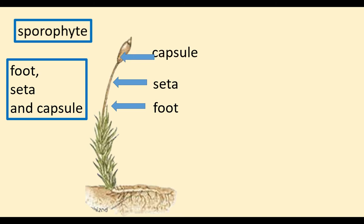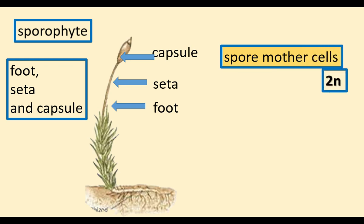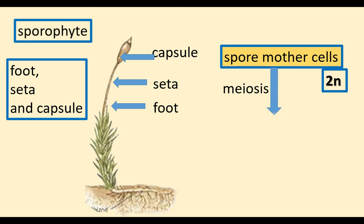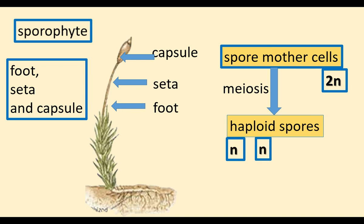The capsules contain spore mother cells. Spore mother cells are diploid and are the last cells of the sporophyte generation. Spore mother cells undergo reduction division (meiosis), which reduces the chromosome number to half, producing four haploid spores from each spore mother cell.